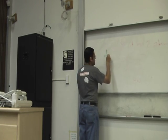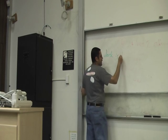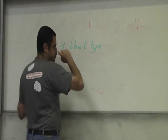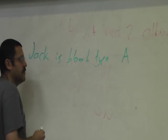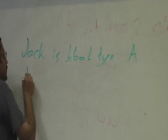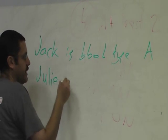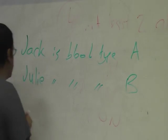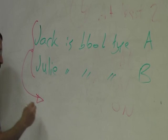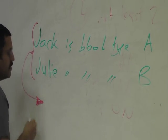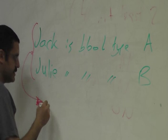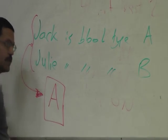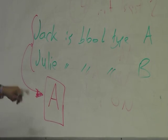Jack is blood type A. Julie is blood type B. The first child, biological child, no other issue, is blood type A. The first born is blood type A.